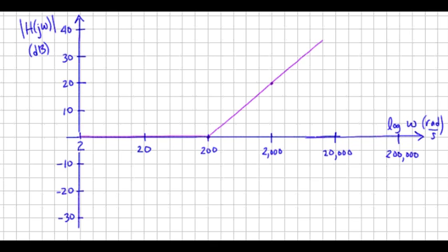So that gives us the response for the first zero. The second zero has its break at 2,000 radians per second, so we increase 20 dB per decade. And we end up with those two traces for our zeros.